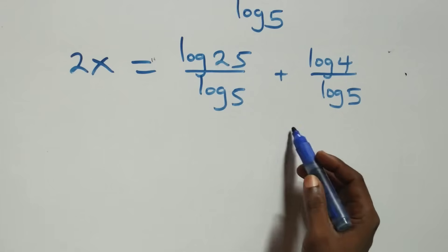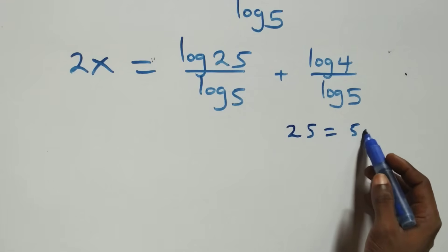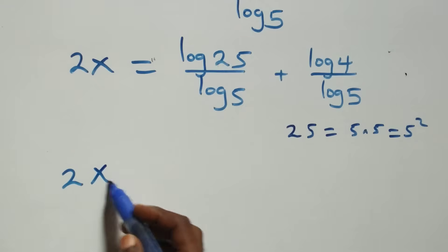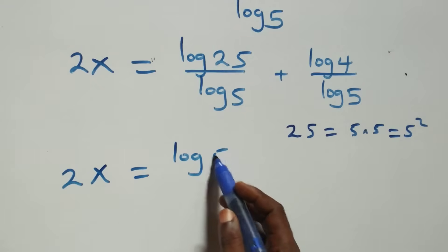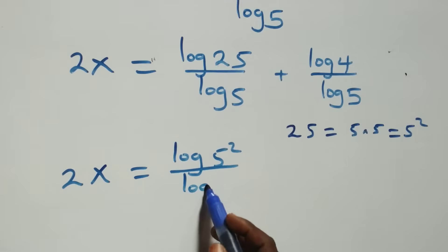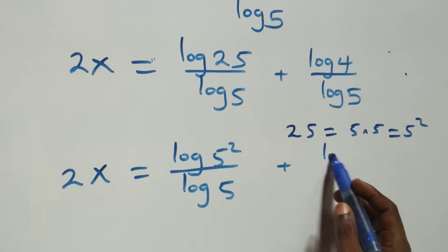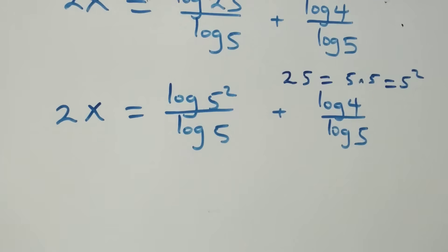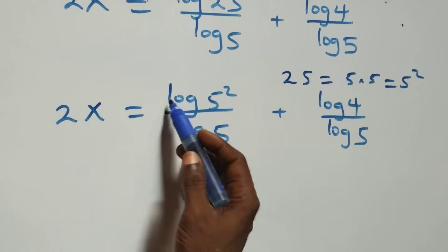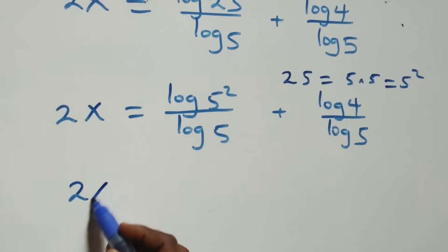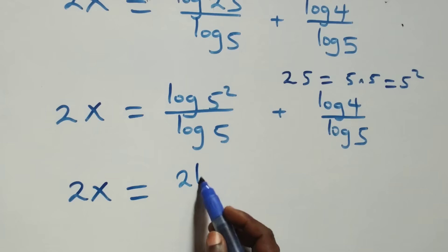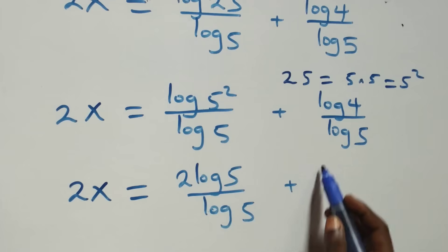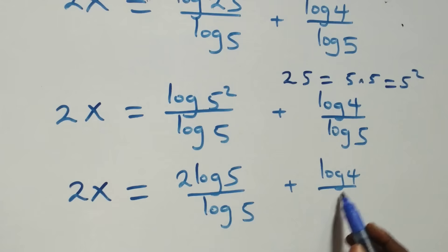We can express 25 as 5 times 5, which is the same thing as 5 squared. So we have 2x equals log(5 squared) over log 5, plus log 4 over log 5. Applying the power rule, 2 comes out and we have 2x equals 2 log 5 over log 5, plus log 4 over log 5.